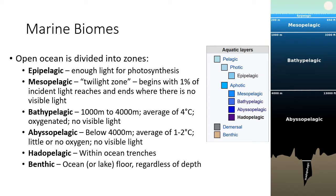One way to organize marine biomes is to look at depth. The open ocean is divided into zones. The epipelagic zone is the very top of the ocean — 0 to 200 meters in this diagram — where there's enough light for photosynthesis. The mesopelagic is the twilight zone, starting where there's 1% of incident light reaching the surface, ending where there's no visible light. The bathypelagic zone is 1,000 to 4,000 meters, with an average temperature of 4 degrees Celsius, dissolved oxygen present, and no visible light.